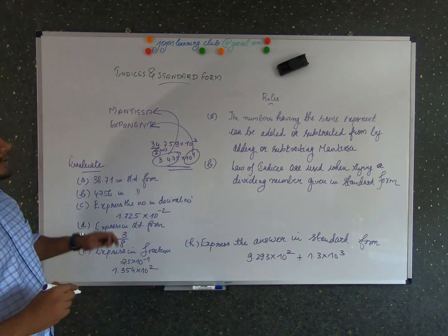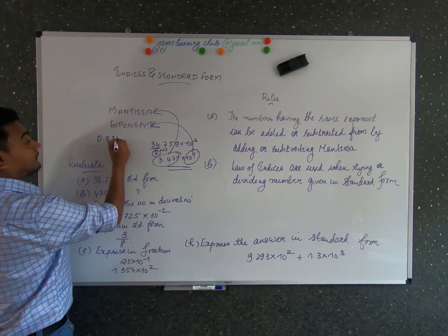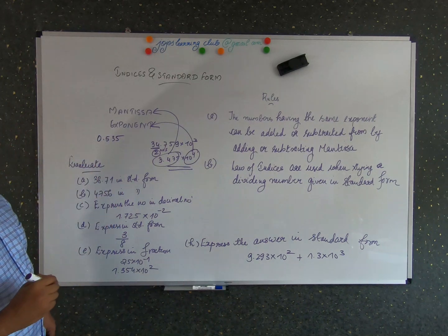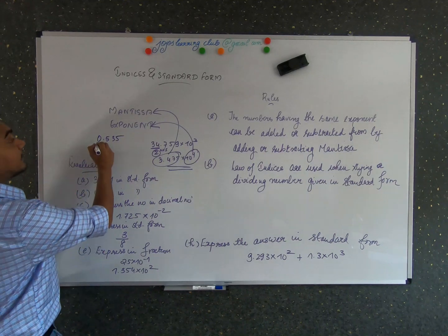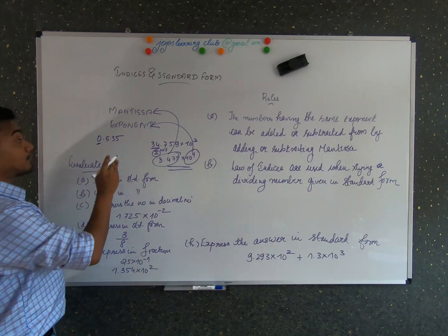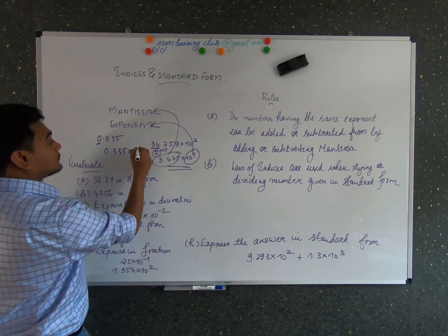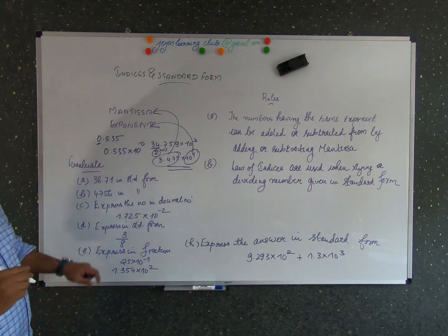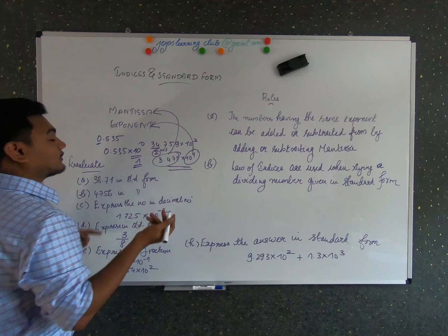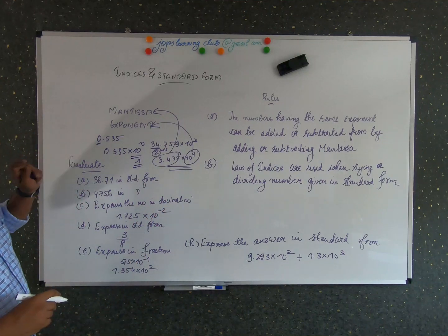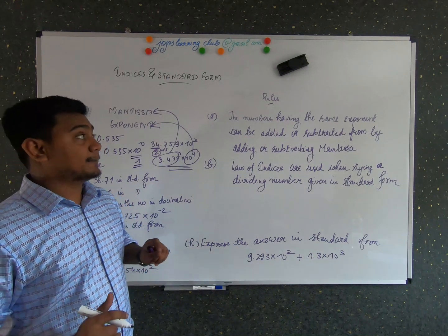Let's write another example: 0.535. To represent this in standard form — there is already one number to the left of the decimal point, so there is nothing to change. You can just write it as 0.535 × 10⁰, because 10⁰ equals 1. That's the key thing to check about standard form: the mantissa and the exponent.